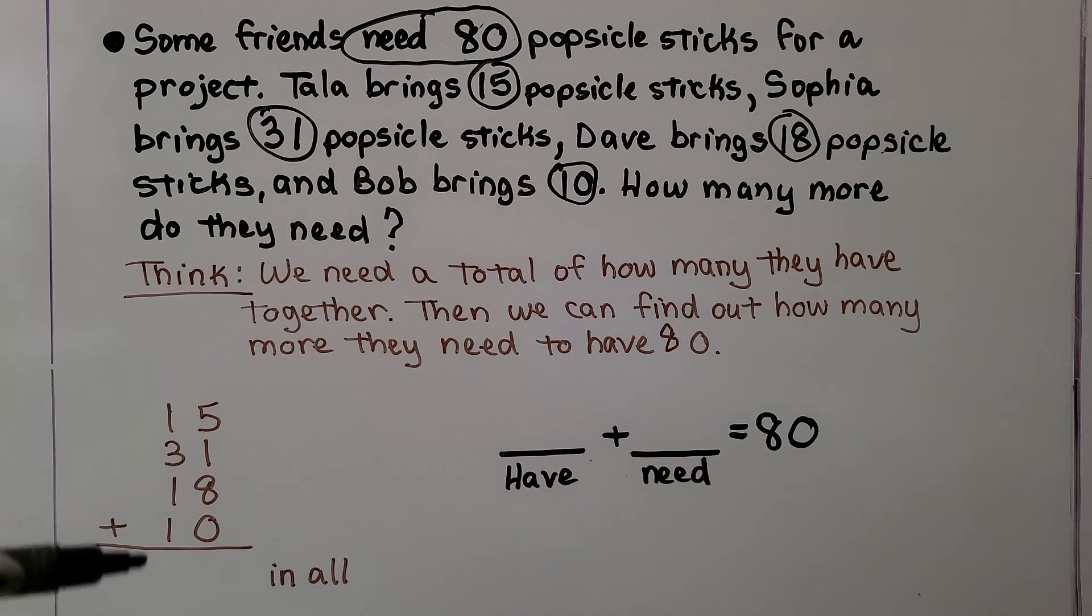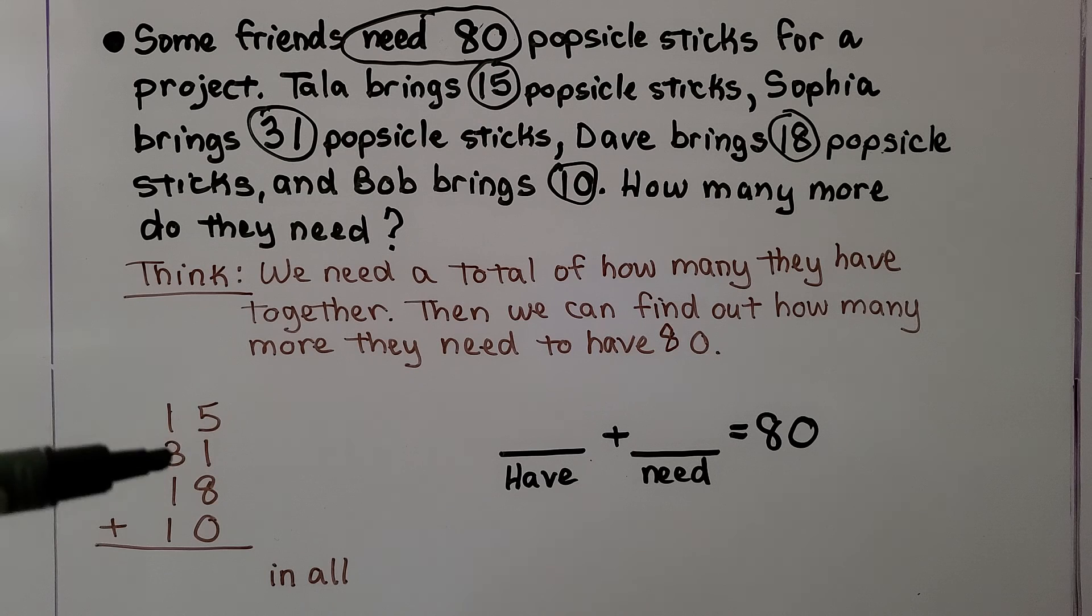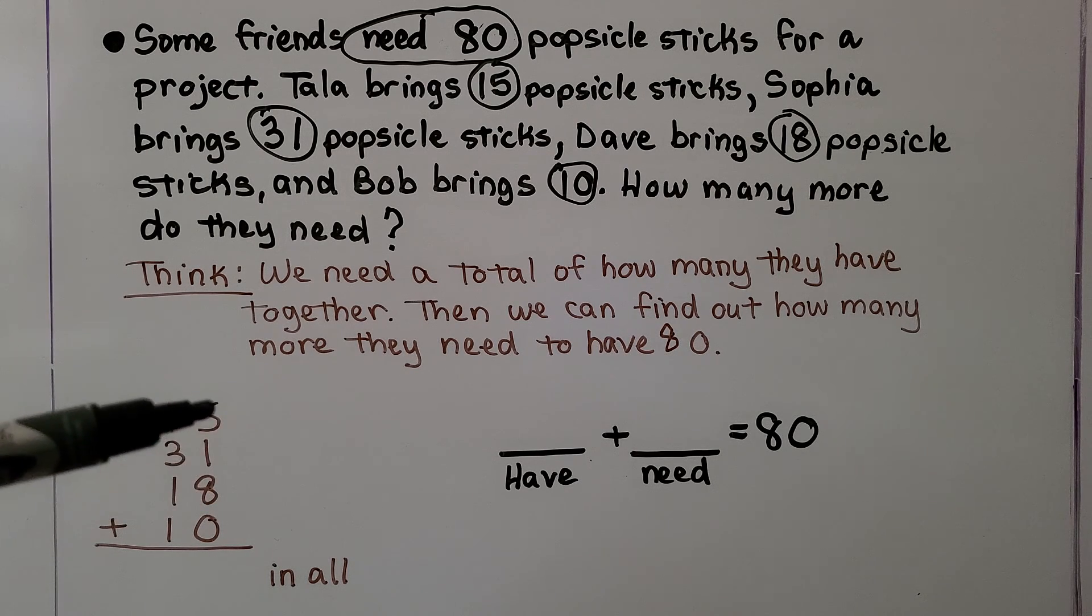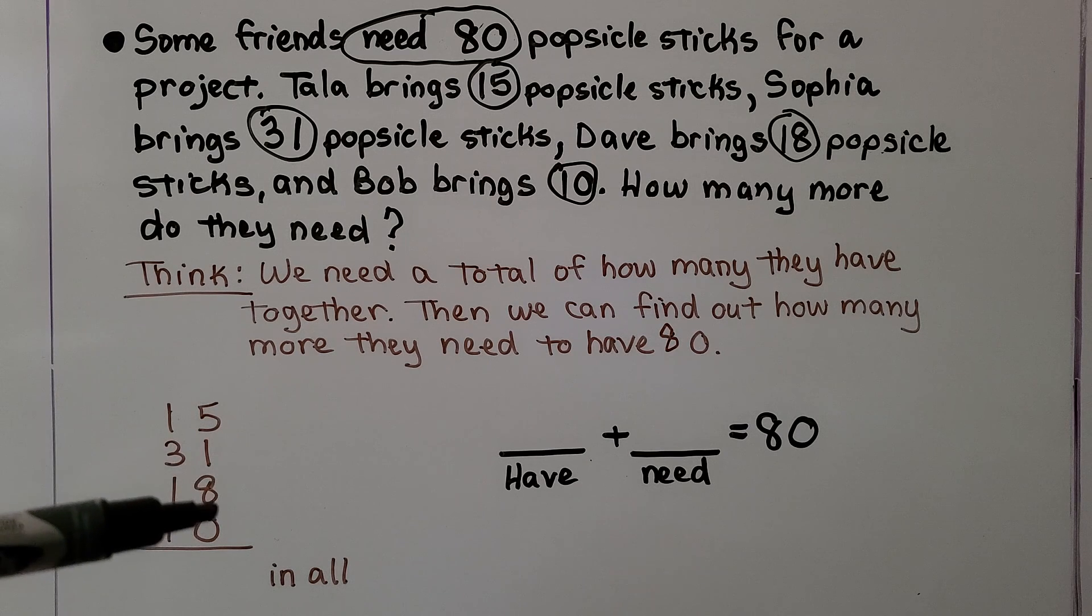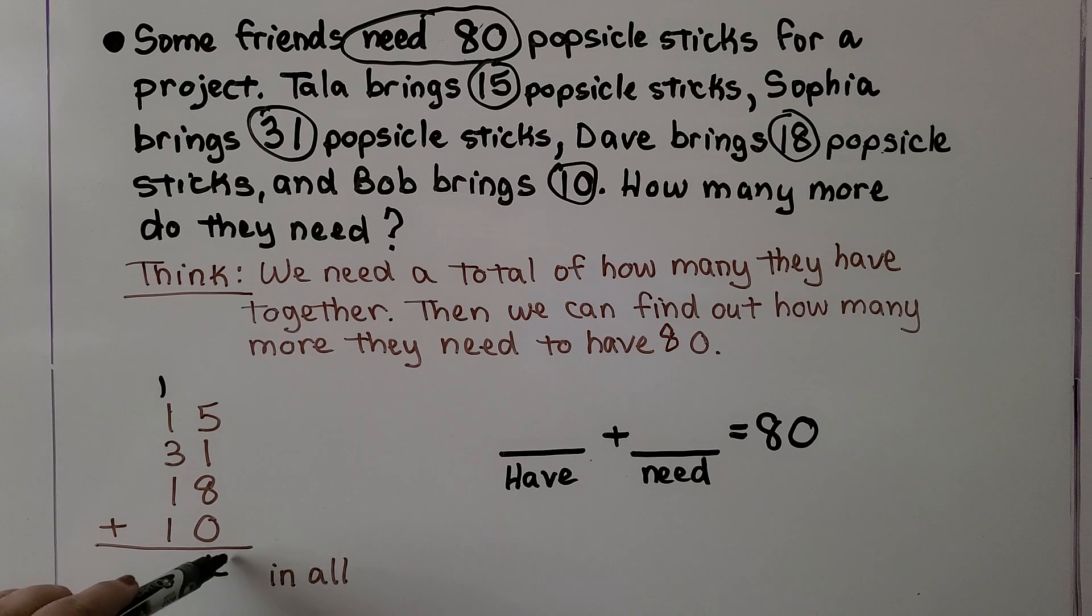We can add them, making sure our columns are straight. We can start by adding the greatest digits. 8 plus 5 is equal to 13. One more is 14 and 0, we're still at 14. We regroup the 10 and write the 4 in the ones place.